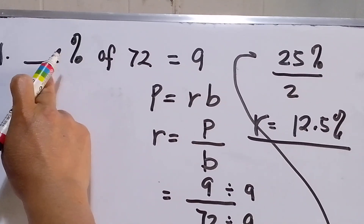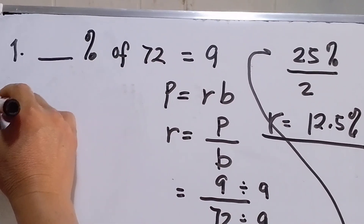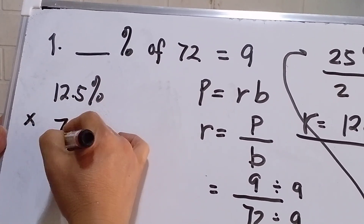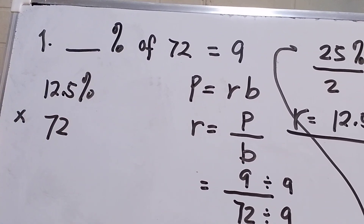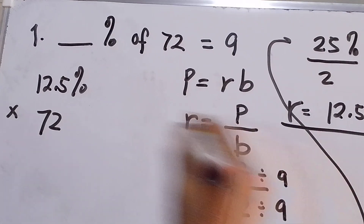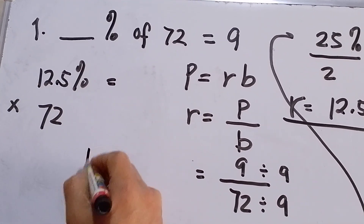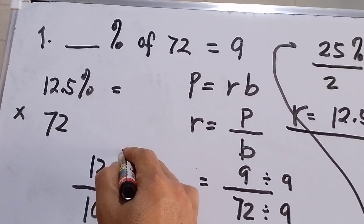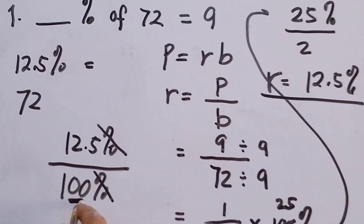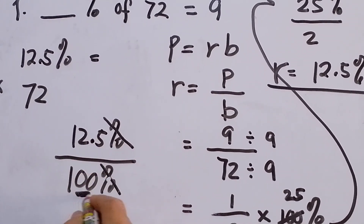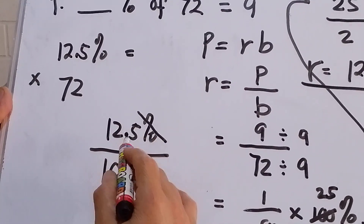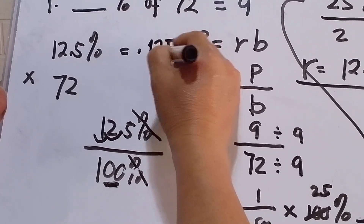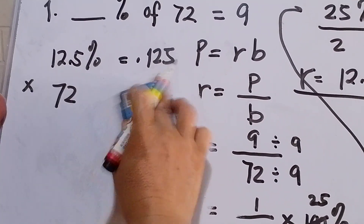Now we check by substituting 12.5 percent back: 12.5 percent of 72. To convert 12.5 percent to decimal, we divide by 100. Crossing out the percent symbol and moving the decimal two places to the left gives us 0.125.